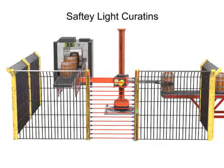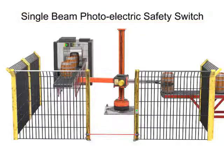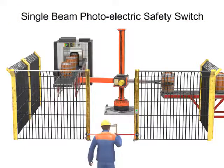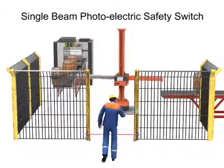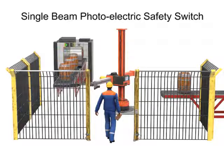Another type of light barrier is called a single-beam photoelectric safety switch. These work in the same way as a light curtain but have only one beam of light, similar to an automatic garage door sensor. Single beams can be useful for preventing unplanned or surprise access to the work area. However, depending on their placement, single-beam lights may not stop a determined person from gaining unauthorized access and potentially causing damage to the robot or personnel.